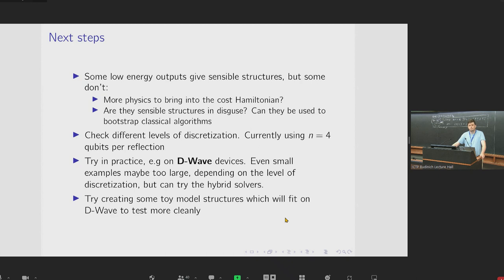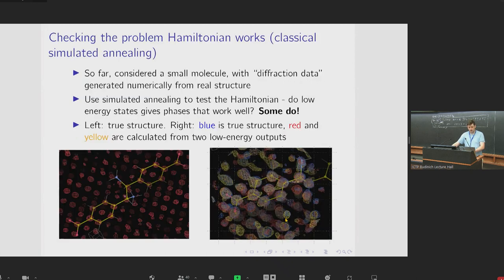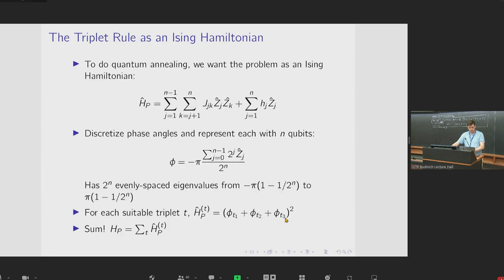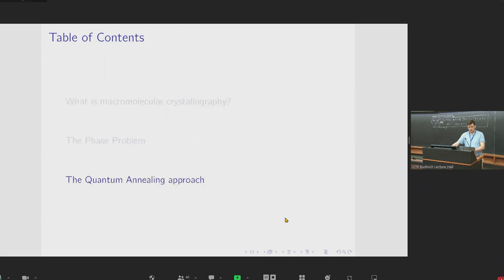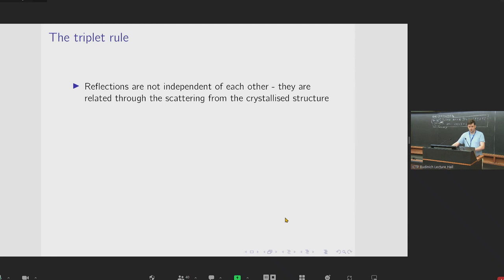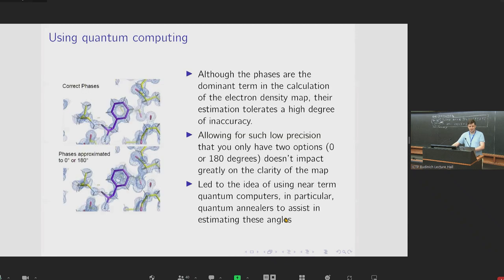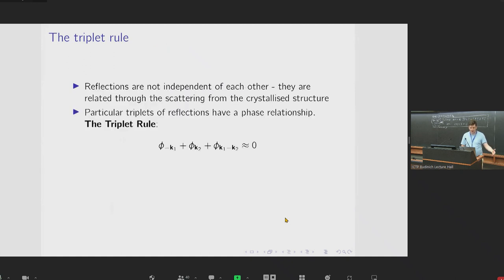Could you go back to the slide where you define the problem? The problem Hamiltonian like this? The computational problem that you're trying to solve? Yeah. Well, so the computational problem is to take that diffraction data and turn it into an electron density structure map. And an approach that may work here is through this triplet rule. And this is an approximate relationship. And we're using this as the basis for our optimization.